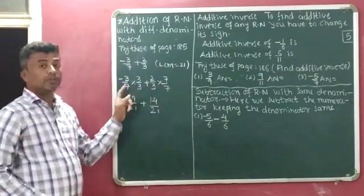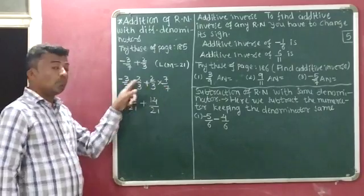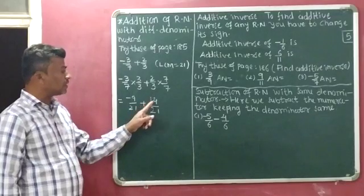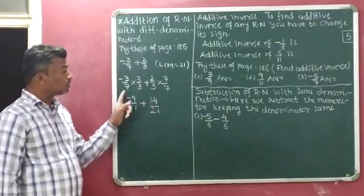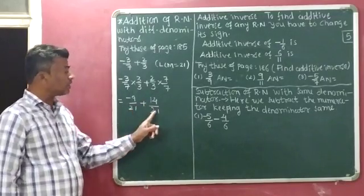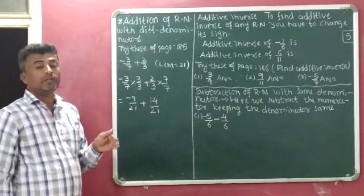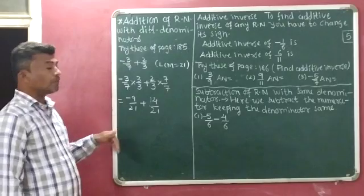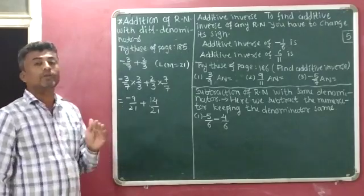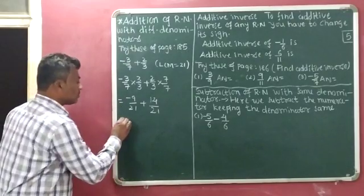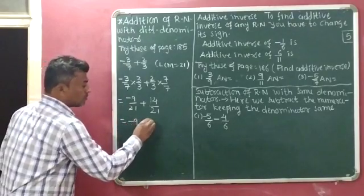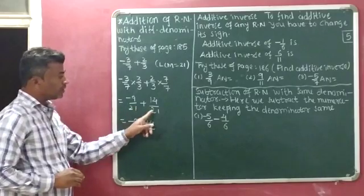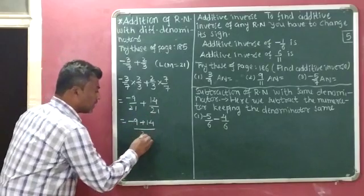Now both rational numbers have the same denominator. We have minus 9 by 21 plus 14 by 21. Both rational numbers have the same denominator, 21. When the denominator is the same, we add the numerators and write the denominator the same. So we get minus 9 plus 14, over 21.